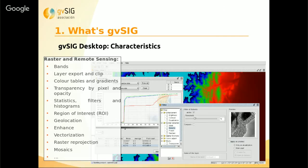For raster and remote sensing layers, we can manage the bands, export them, or clip raster layers. We can apply color tables or transparency by pixel or for the whole image. We can view statistics and histograms of different images, and we can also vectorize raster files to create new vector layers from them.